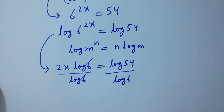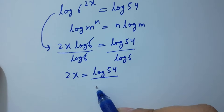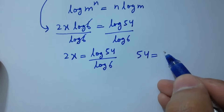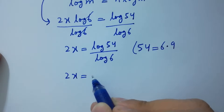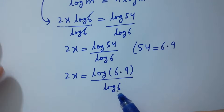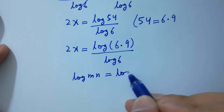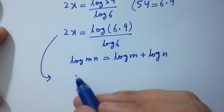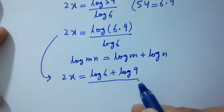Log 6 and log 6 cancel, giving 2x equal to log 54 over log 6. Since 54 equals 6 times 9, we write 2x equal to log of 6 times 9, over log 6. Applying log m·n equals log m plus log n, we get 2x equal to log 6 plus log 9, over log 6.